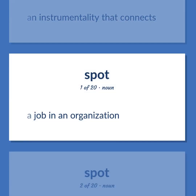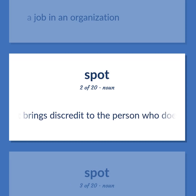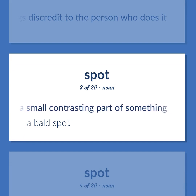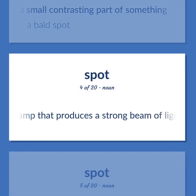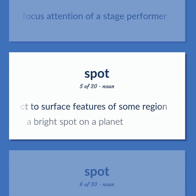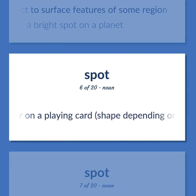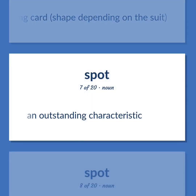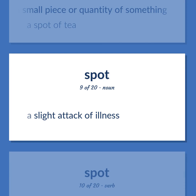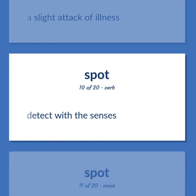Spot (noun): A job in an organization. An act that brings discredit to the person who does it. A small contrasting part of something. A bald spot. A lamp that produces a strong beam of light to illuminate a restricted area, used to focus attention of a stage performer. A point located with respect to surface features of some region. A bright spot on a planet. A mark on a die or on a playing card, shape depending on the suit. An outstanding characteristic. A small piece or quantity of something — a spot of tea. A slight attack of illness. Detect with the senses.